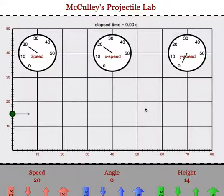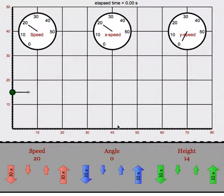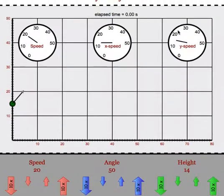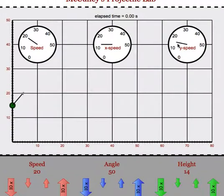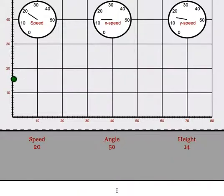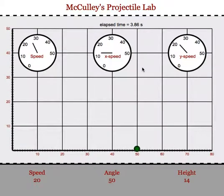One other thing students should notice is that if they fire the projectile at an angle, hopefully they will catch on or you could direct them to notice that the y speed will drop down to zero when the projectile reaches its maximum height. Then they could see the speed increasing in the downward direction as the projectile returns to the Earth.